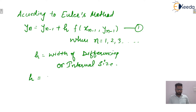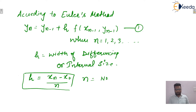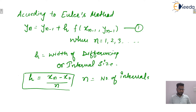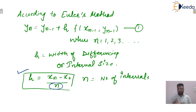h is calculated as h = (xₙ - x₀) / n, where n is the number of intervals, which will be given in the question statement. If n is large, then h will be small — meaning the interval size is smaller. Therefore, as we increase n, we get a more accurate approximate value.